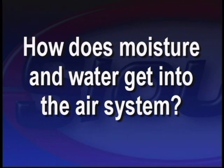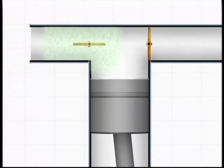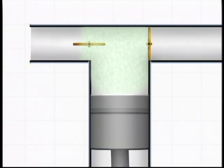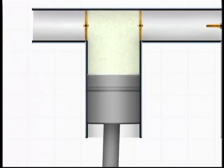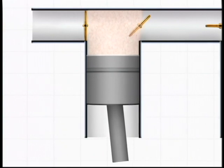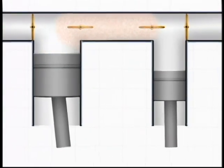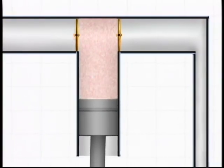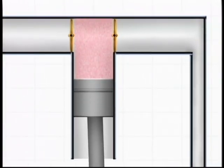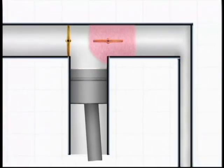A question that many customers ask is how does moisture and water get into the air system? The first stage is when atmospheric air is taken into the compressor by the first piston and compressed to around 150 PSI. The compressed air is taken by the second piston and compressed to around 175 PSI. As the air is compressed, it becomes hot.